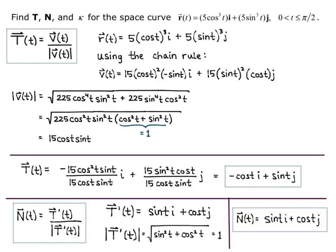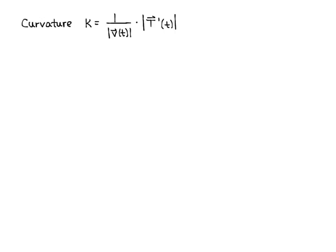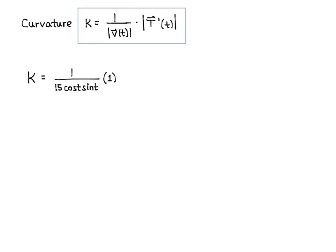So the last thing we want is the curvature. Curvature — remember, kappa equals 1 over the magnitude of velocity times the magnitude of capital T prime of t. So that's 1 over 15 cosine of t sine of t times 1, which gives us a curvature of 1 over the quantity 15 cosine t sine t.